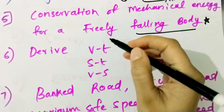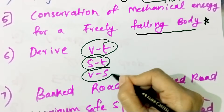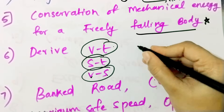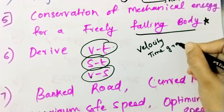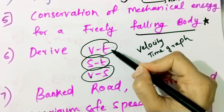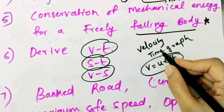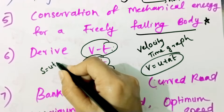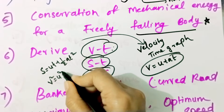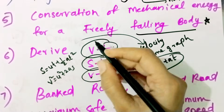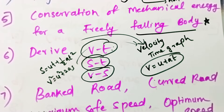Next is: Derive Velocity-Time Relation, Derive Displacement-Time Relation, and Derive Velocity-Displacement Relation from Velocity-Time Graph. That means: Derive v = u + at from Velocity-Time Graph, Derive s = ut + ½at² from Velocity-Time Graph, Derive v² = u² + 2as from Velocity-Time Graph. That means Derive Kinematic Equations of Motion — these form the three sections.